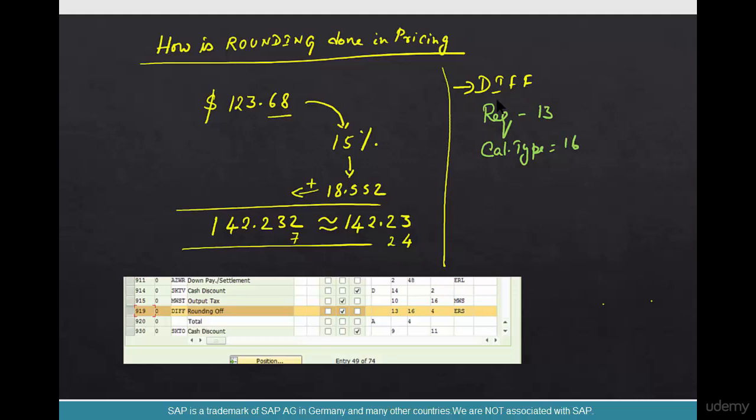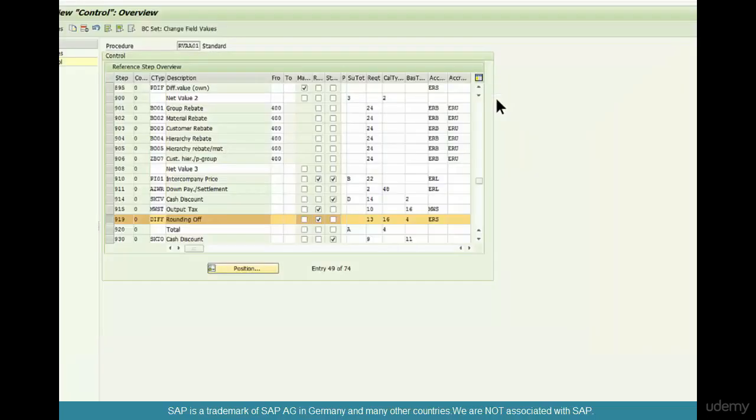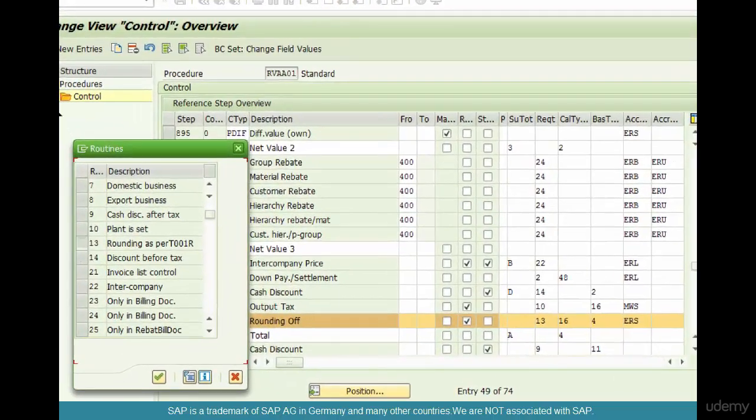So what does requirement 13 do? Requirement 13 says rounding as per T001R. Okay, so it says I'm going to do rounding or check for rounding against a particular table. T001R is basically a table.